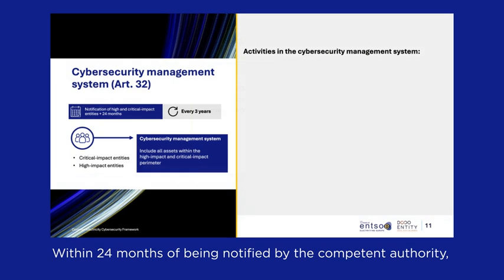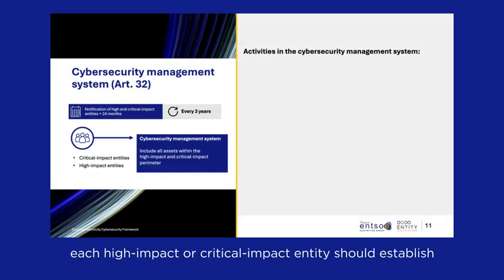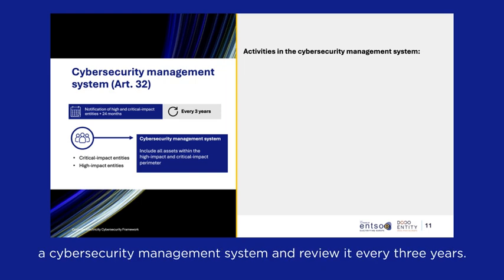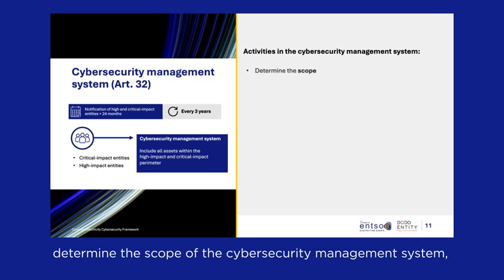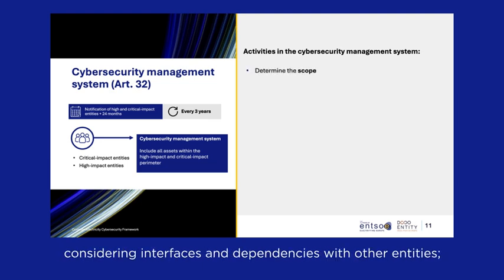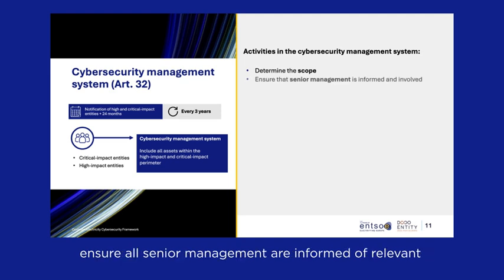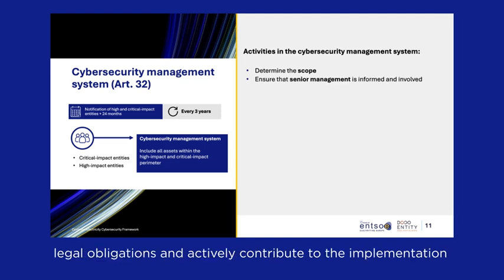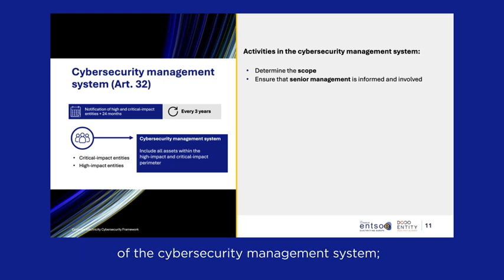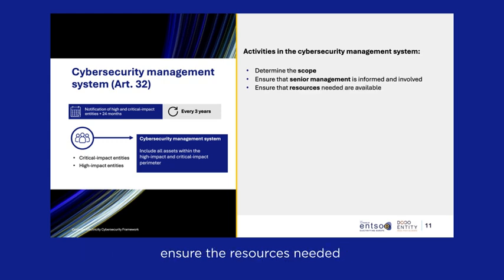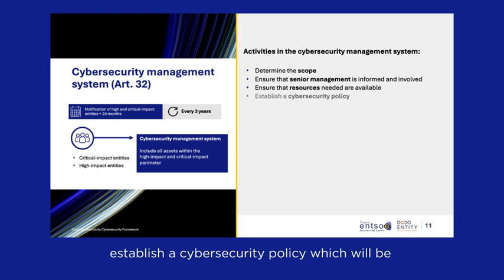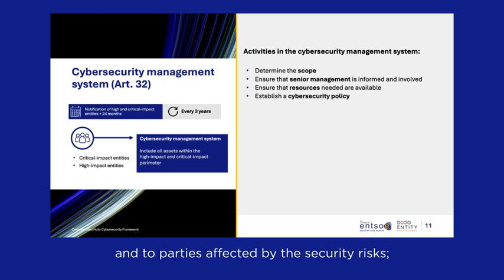Within 24 months of being notified by the competent authority, each high-impact or critical-impact entity should establish a cybersecurity management system and review it every three years. Its objectives are to: determine the scope of the cybersecurity management system, considering interfaces and dependencies with other entities; ensure all senior management are informed of relevant legal obligations and actively contribute to its implementation; ensure the resources needed are available; and establish a cybersecurity policy which will be documented and communicated within the entity and to parties affected by the security risks.